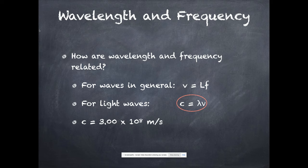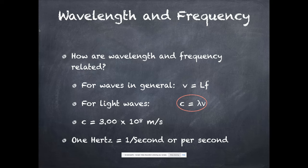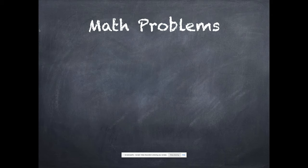So C equals 3.00 times 10 to the 8th meters per second. That's the speed of light. And don't forget that a Hertz is one over a second or per second. So lambda is in meters. Hertz is in one over a second. And that's how we get meters per second for the speed of light. A couple of review math problems there for you to try.